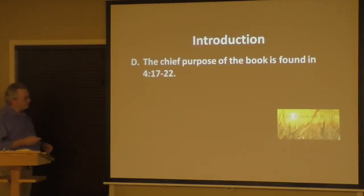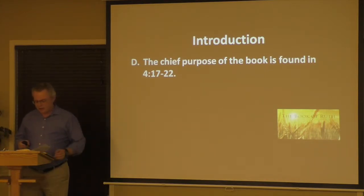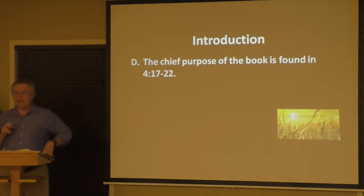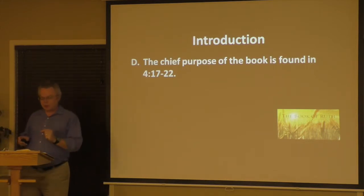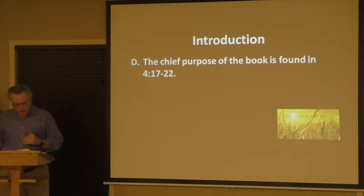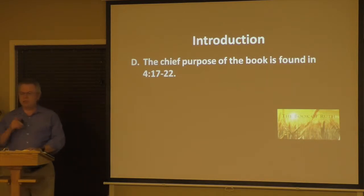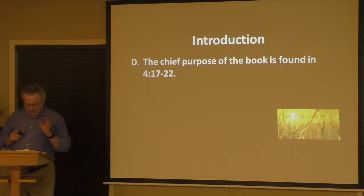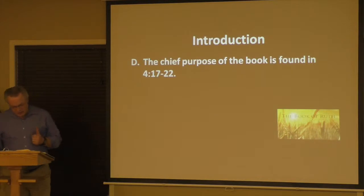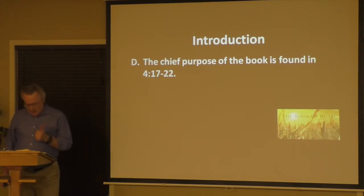The chief purpose of the book is really found in the last chapter and last verses. In Ruth chapter 4, beginning at verse 17: 'The neighbor women gave him a name saying, this is the son born to Naomi, and they called his name Obed. He is the father of Jesse, the father of David.' The genealogy then traces: Perez begot Hezron, Hezron begot Ram, Ram begot Aminadab, Aminadab begot Nashon, Nashon begot Salmon, Salmon begot Boaz, Boaz begot Obed, Obed begot Jesse, and Jesse begot David.